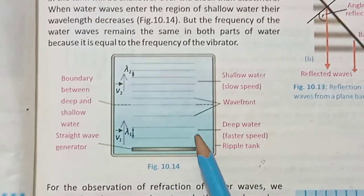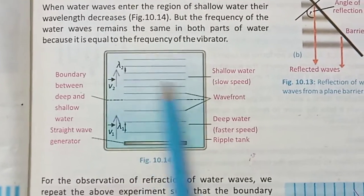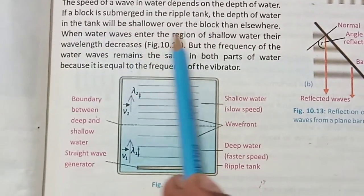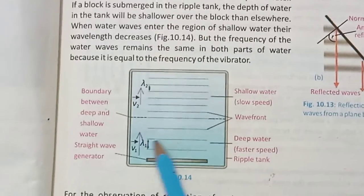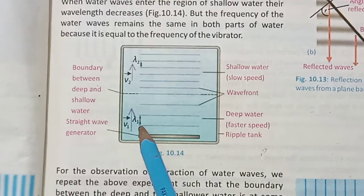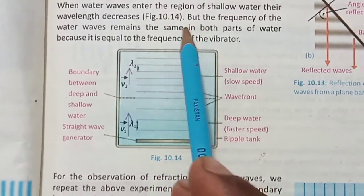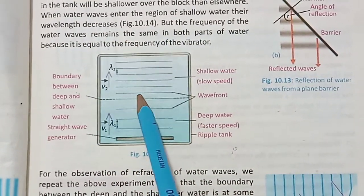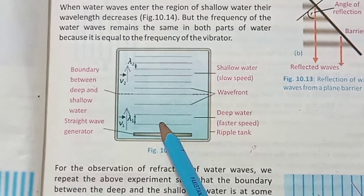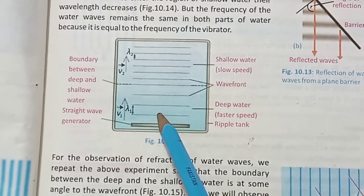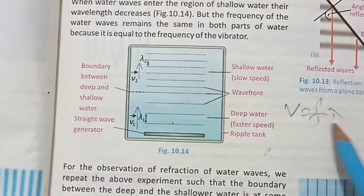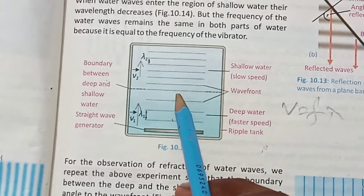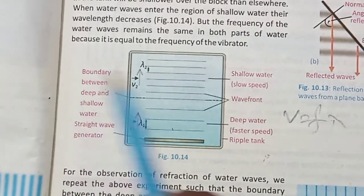Here we have two surfaces: one is a deep surface and one is a shallow surface. If a block is submerged in the ripple tank, the depth of the water over the block will be shallow compared to elsewhere. When water waves enter the region of shallow water, their wavelength decreases. Using the formula V equals F times lambda, when the wavelength decreases and frequency remains constant, the speed of the wave also decreases.